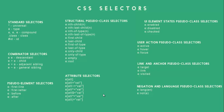UI element state pseudo class selectors, User action pseudo class selectors, Link and Anchor pseudo class selectors, and Negation and Language pseudo class selectors. In the upcoming tutorials I am going to take up one category at a time and discuss all selectors in it with you.